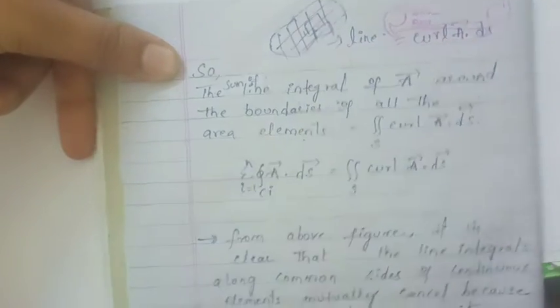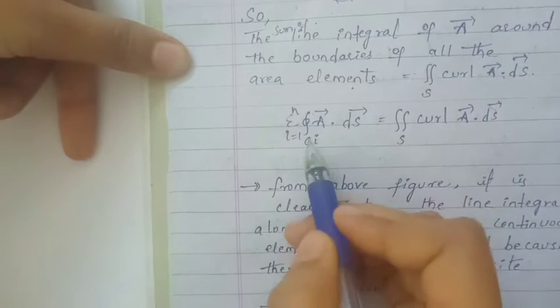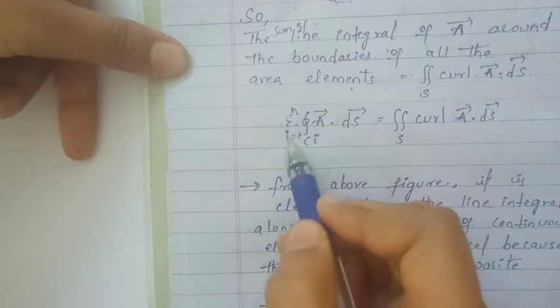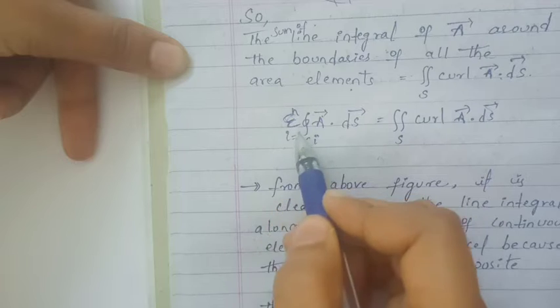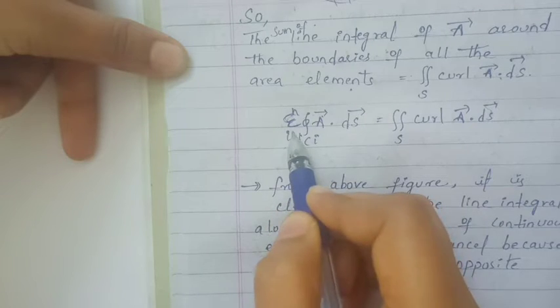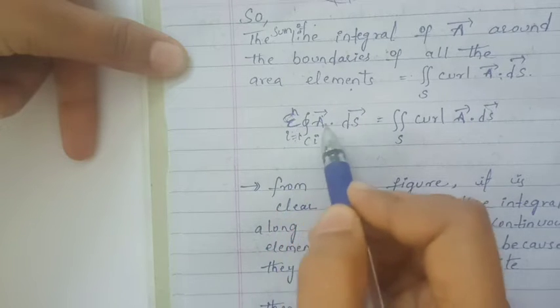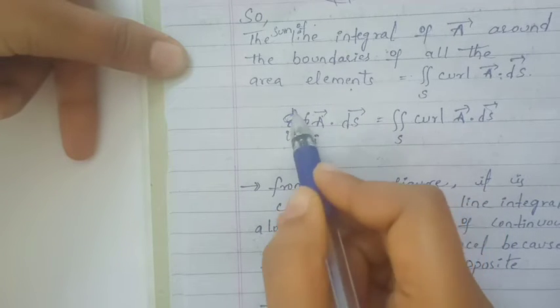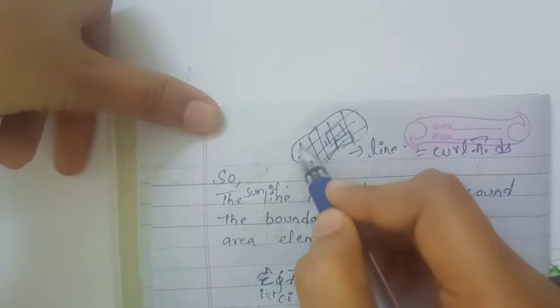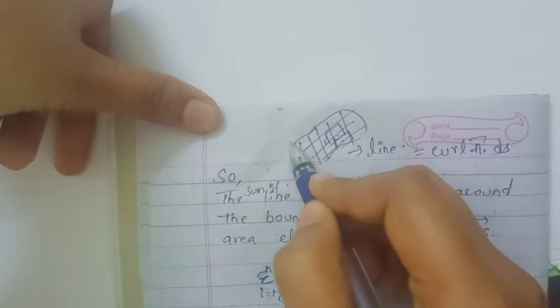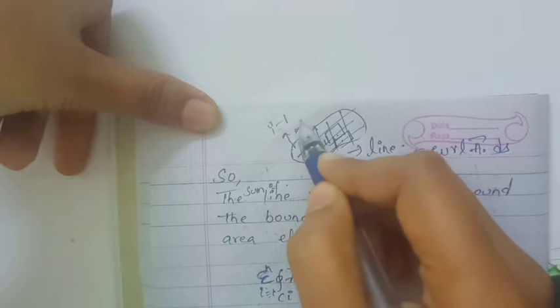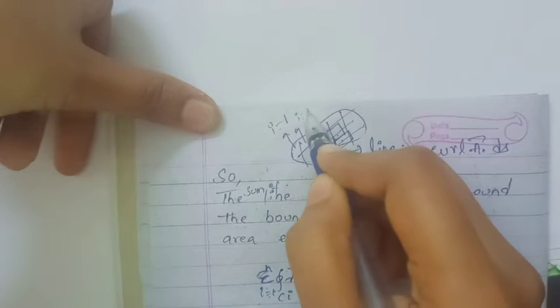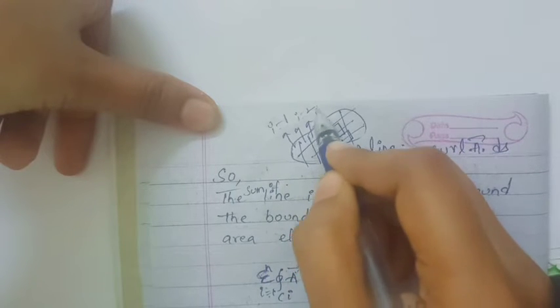The sum of line integrals of A around the boundaries of all the small area elements is equal to the surface integral of curl of A · dS. We have a summation from i equals 1 to n, representing all the small surface elements.